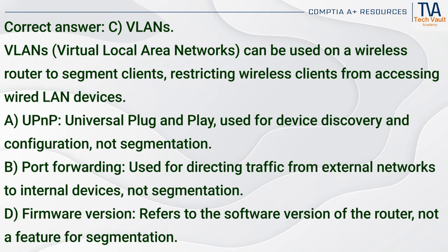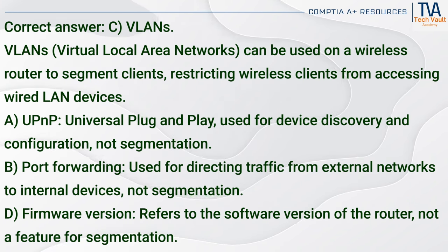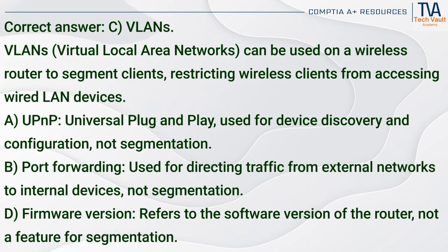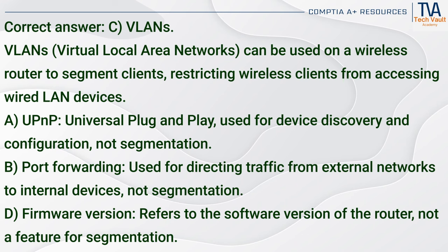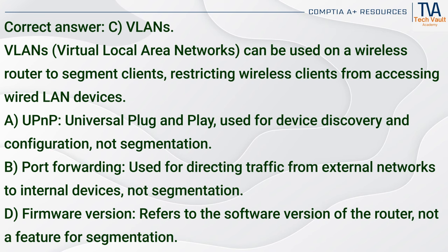Correct answer: C. VLANs. VLANs (Virtual Local Area Networks) can be used on a wireless router to segment clients, restricting wireless clients from accessing wired LAN devices. UPnP (A) — Universal Plug and Play — is used for device discovery and configuration, not segmentation. Port forwarding (B) is used for directing traffic from external networks to internal devices, not segmentation.